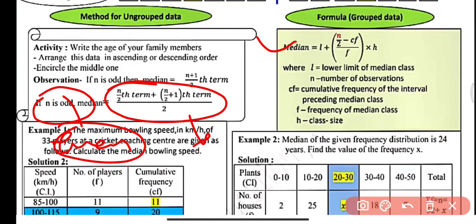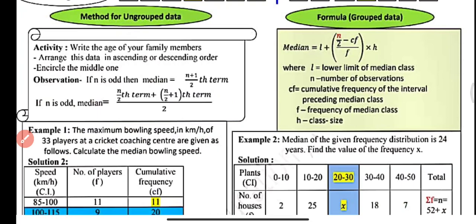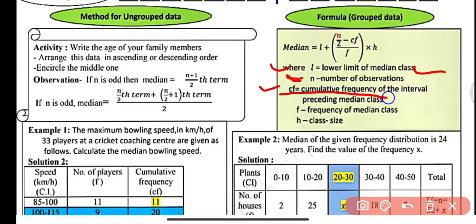When the data is in grouped form — that is, we are given class intervals and respective frequencies — we use the formula: Median = l + [(n/2 − cf) / f] × h. Here, l is the lower limit of the median class, and n is the total number of observations, which equals the summation of fi. cf is the cumulative frequency of the interval preceding the median class.